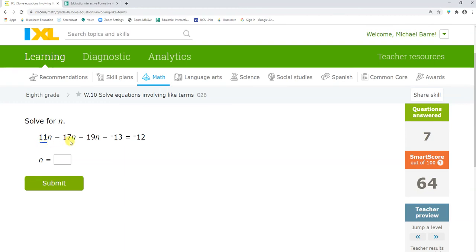All right. 11n minus 17n minus 19n plus 13. Okay, let's combine these. 11 minus 17 is negative 6. Negative 6 minus 19 is negative 25. So, I have negative 25n plus 13 equals negative 12. It's now a two-step equation. So, I'll subtract 13 from both sides. Negative 25n equals negative 25. Dividing both sides by negative 25, n equals 1.